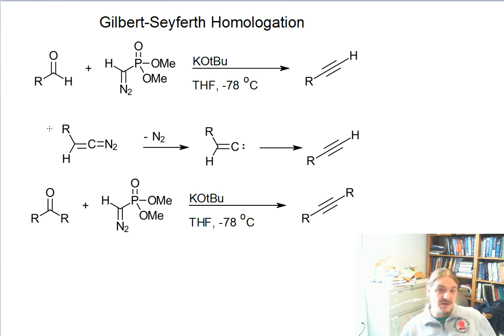The initial outcome of this first reaction is similar to something called the Horner-Wadsworth-Emmons reaction. It's similar to the Wittig reaction. Again, I'm not going to talk about this first step here, but after the first step, you form this diazo alkene, which can lose a molecule of nitrogen to form our carbene intermediate, which rearranges to the terminal alkyne.